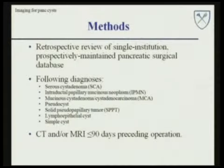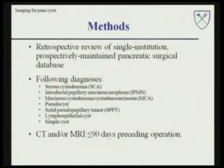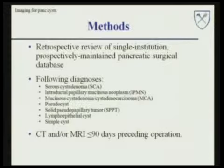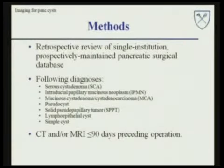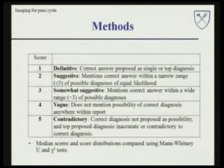In order to explore this hypothesis, we performed a retrospective review of a single institution prospectively maintained pancreatic surgical database. We performed a query for surgical pathologic report mention of cystic pancreatic lesions, inclusive of the listed histologies. We then further narrowed our study group to those patients who underwent CT and MRI on a preoperative basis within a 90-day period preceding the date of operation. Using surgical pathology reports as standards for comparison, each CT and MRI with their associated reports was assigned a score from one to five based on their proposed diagnoses.